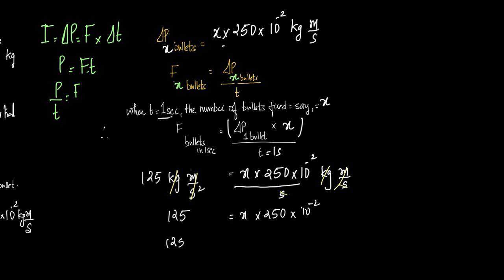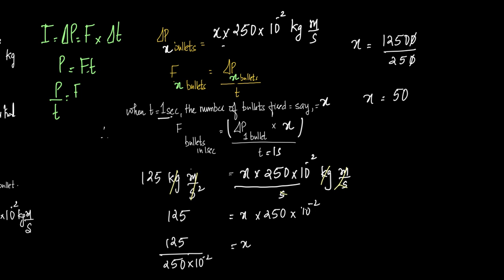Therefore, X is equal to 125 divided by 250 into 10 to the power minus 2, which gives X is equal to 50. Therefore, the number of bullets fired per second is equal to 50. This is the elaborate, subjective way to understand the question. In the coming questions, we'll skip the basic steps and try to do the questions faster.